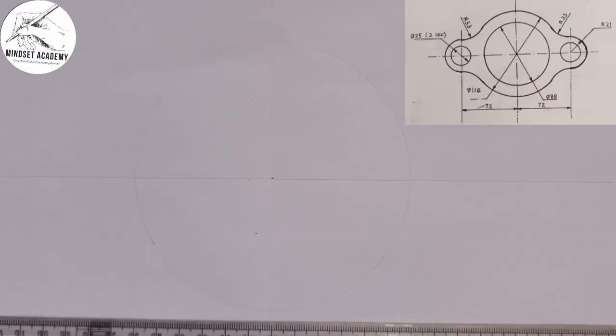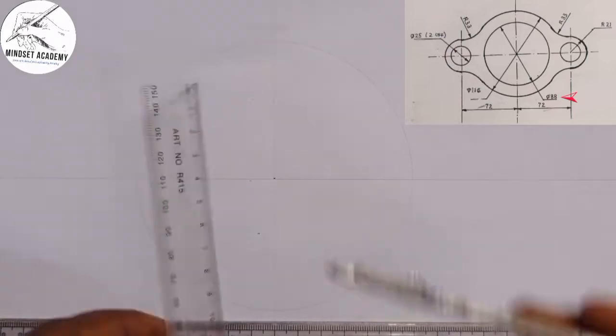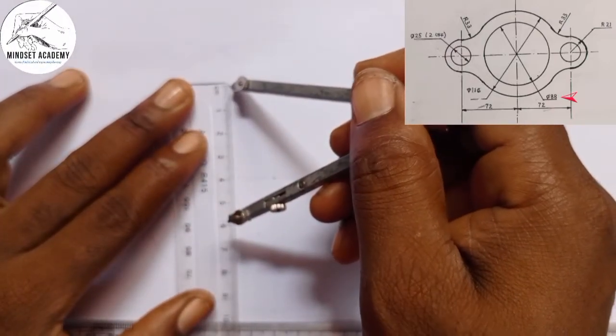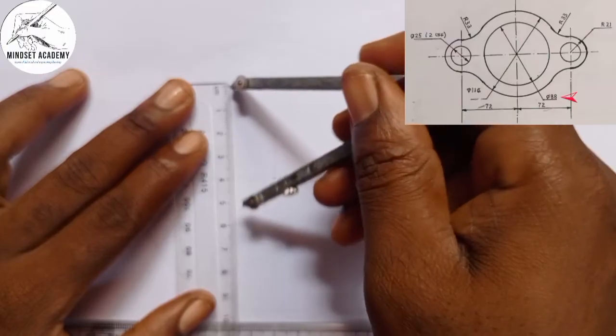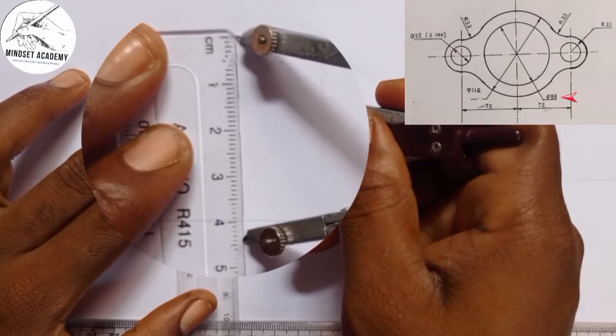Now the next thing that I am going to do here is the diameter of the inner circle, and that is 88. So I need 44 to get that point. So I am going to measure 44. From here to this point here, it is given as 44.